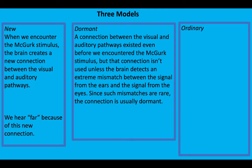Dormant says a connection between the visual and auditory pathways existed even before you encountered the McGurk stimulus, but the connection wasn't used. It's only used when your brain detects an extreme mismatch between the signal from the eyes and the signal from the ears, and then it says, hey, given this extreme mismatch, let's use what happens to the eyes to determine what you should hear.